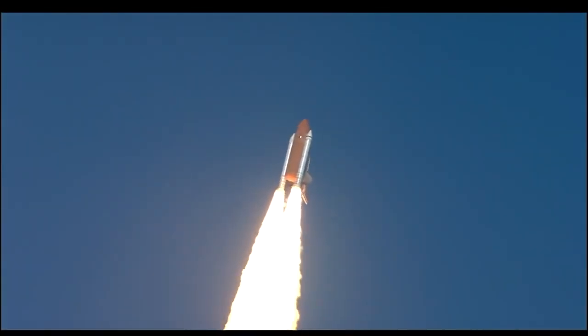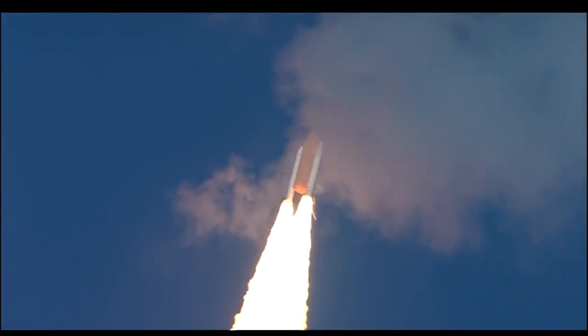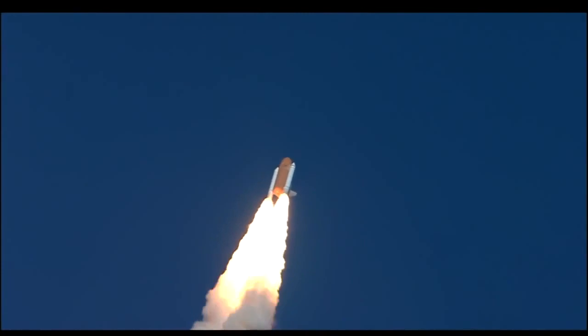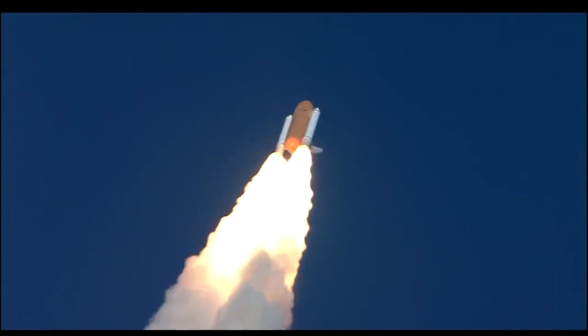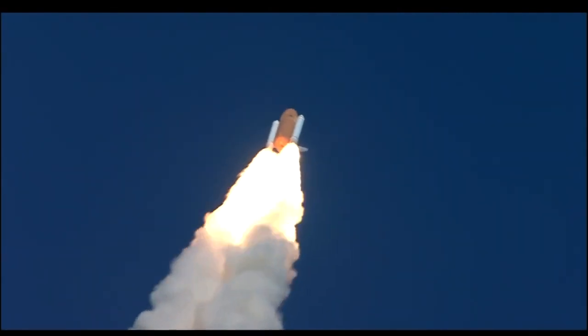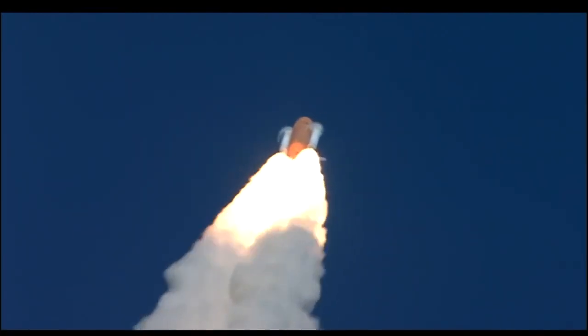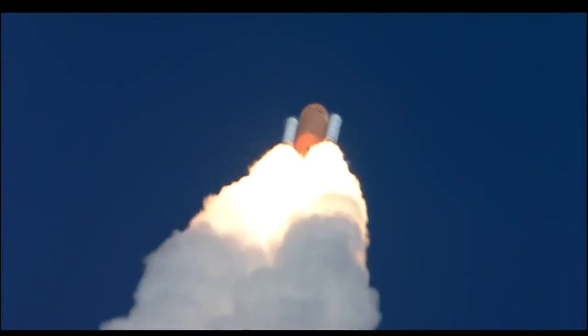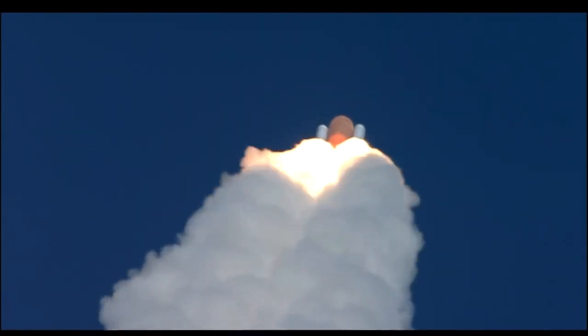Houston's now controlling. Endeavour rolling on a course northeast away from the Kennedy Space Center toward an orbit that will take it above 95% of the world's population during its mission. Endeavour's speed already 300 miles per hour. Altitude one mile. Three engines on Endeavour are now throttling back to two-thirds throttle as the spacecraft prepares to go through the area of maximum aerodynamic pressure and go supersonic.